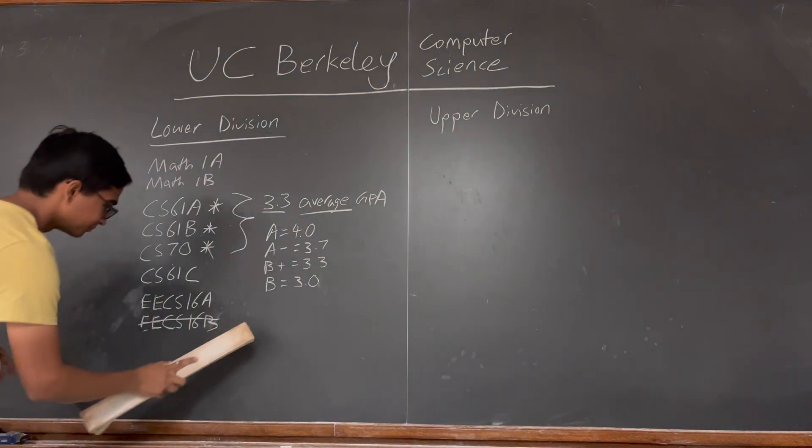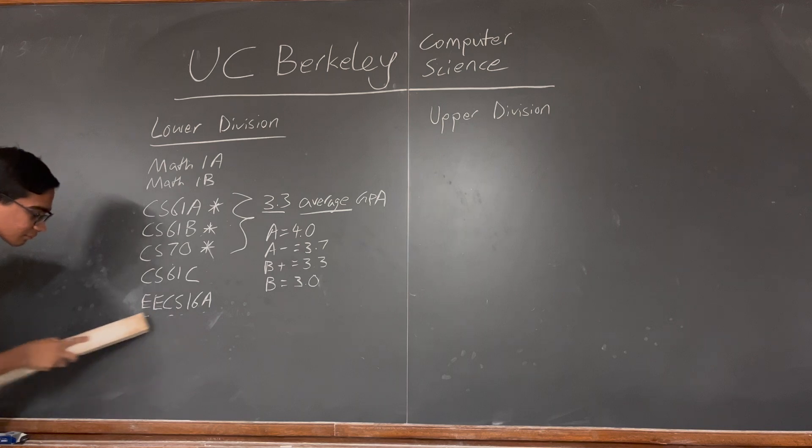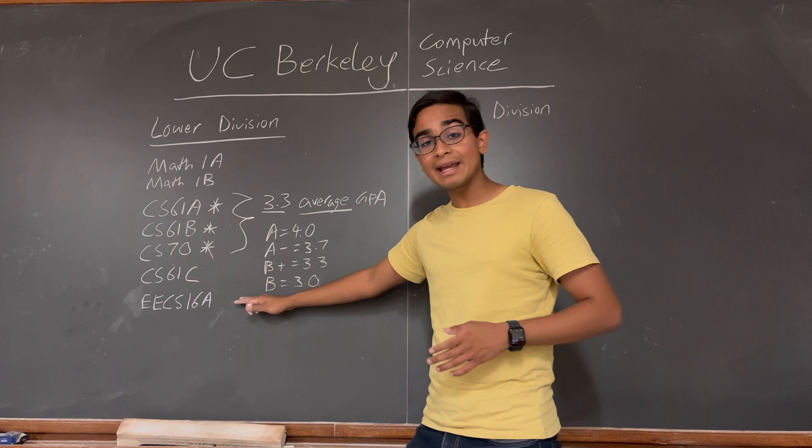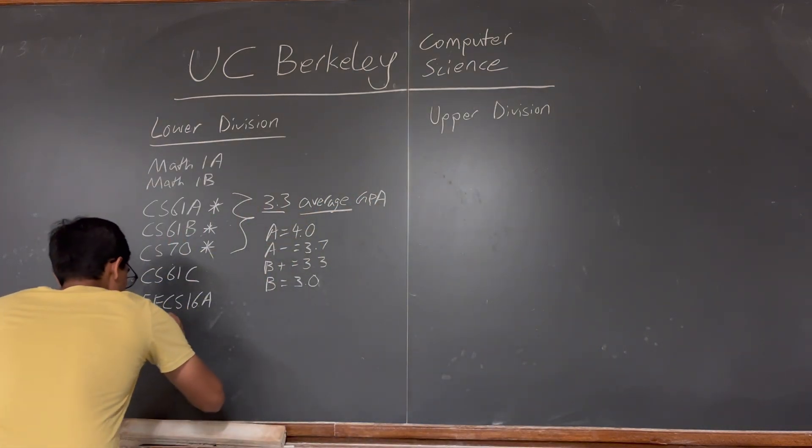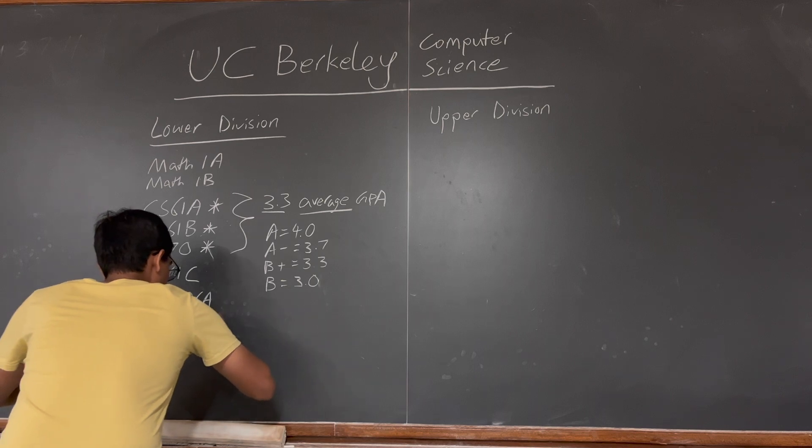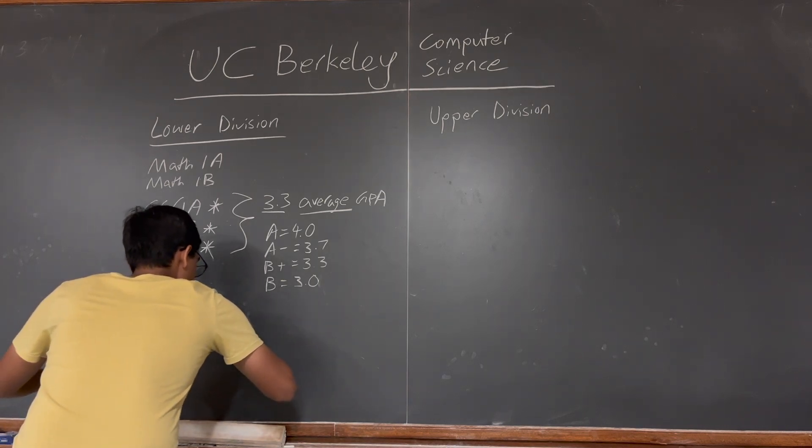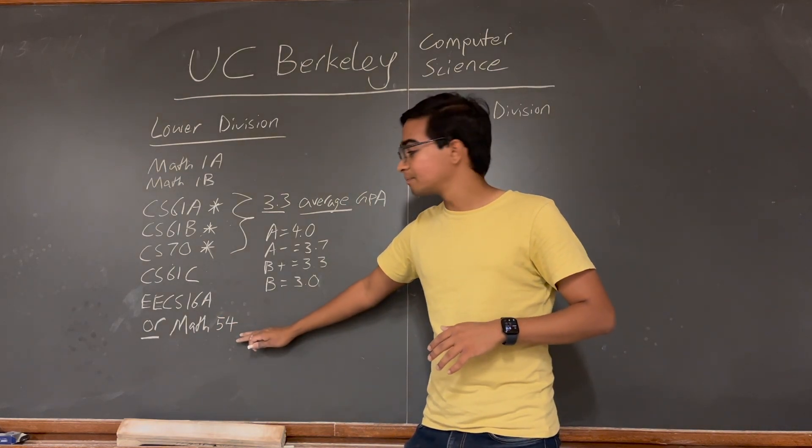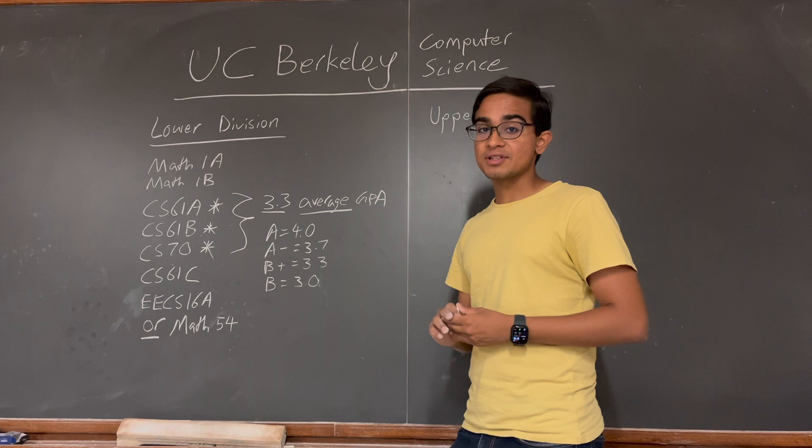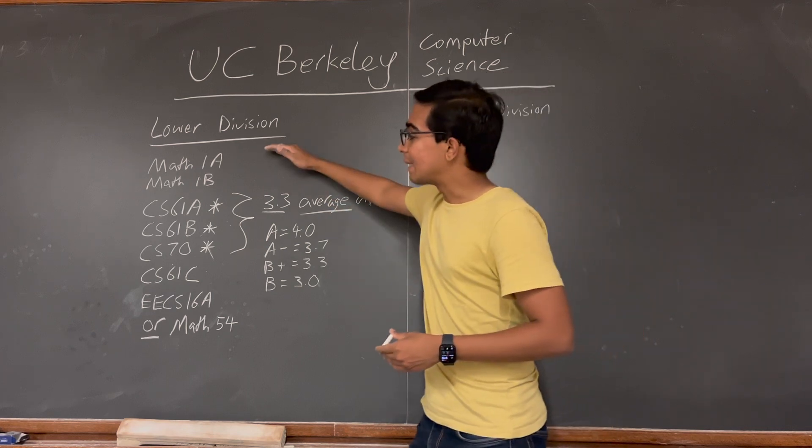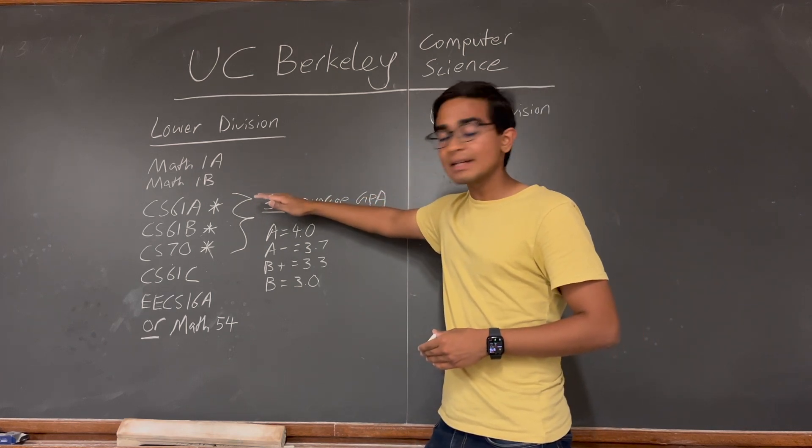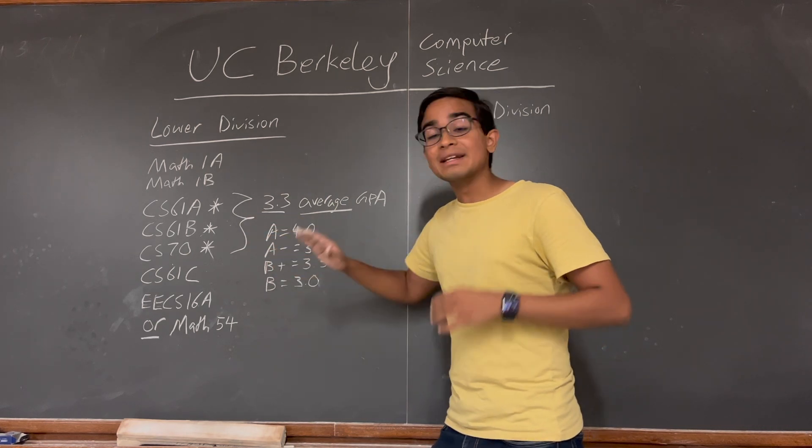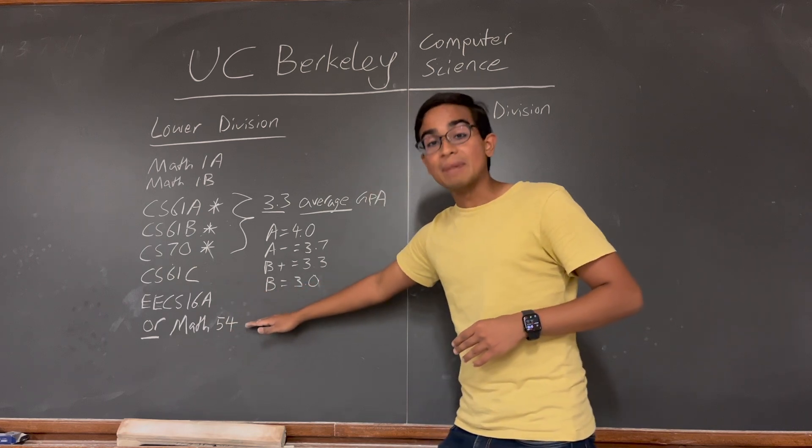Let me just erase that off the board. This means that you have to take EECS 16A or MATH 54, which is Linear Algebra. So this rounds up the lower division classes for computer science. You need to take MATH 1A, MATH 1B, CS61A, CS61B, CS70, CS61C, and either EECS 16A or MATH 54.